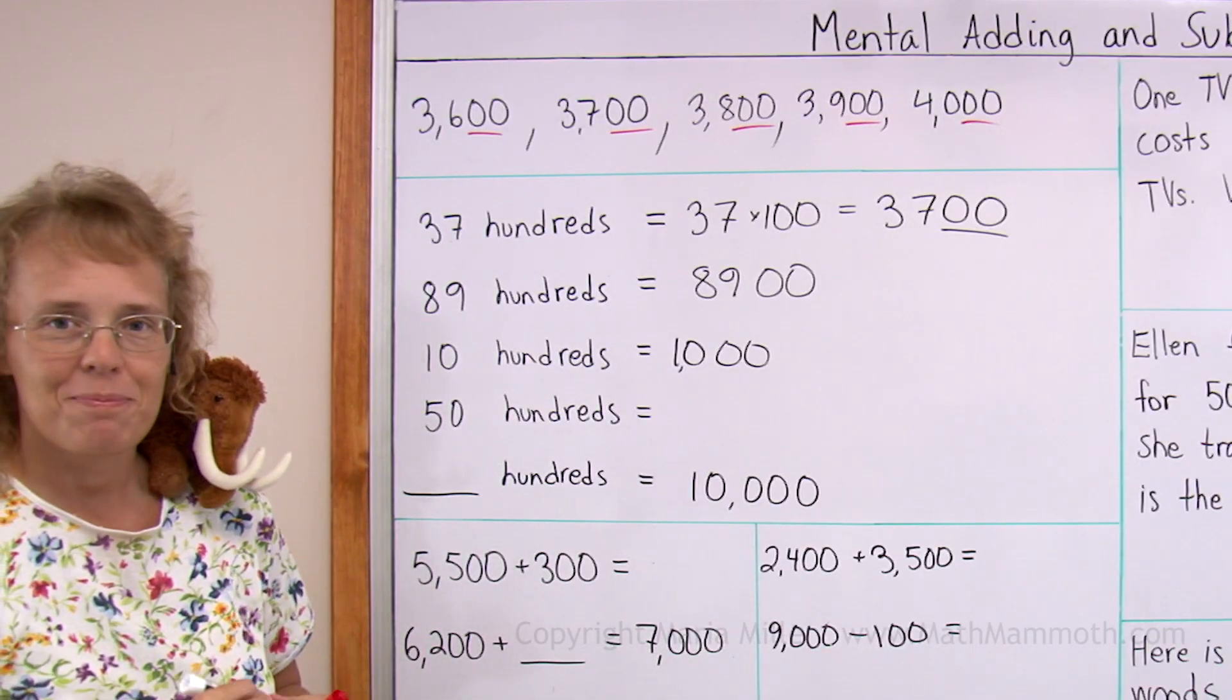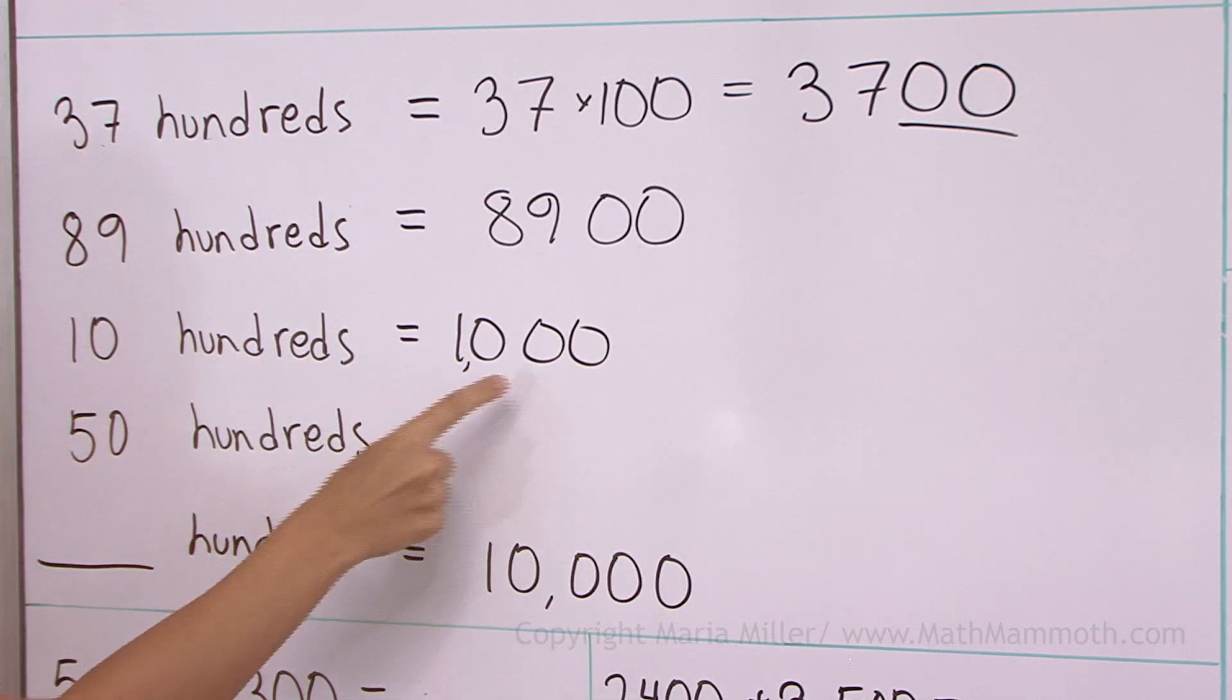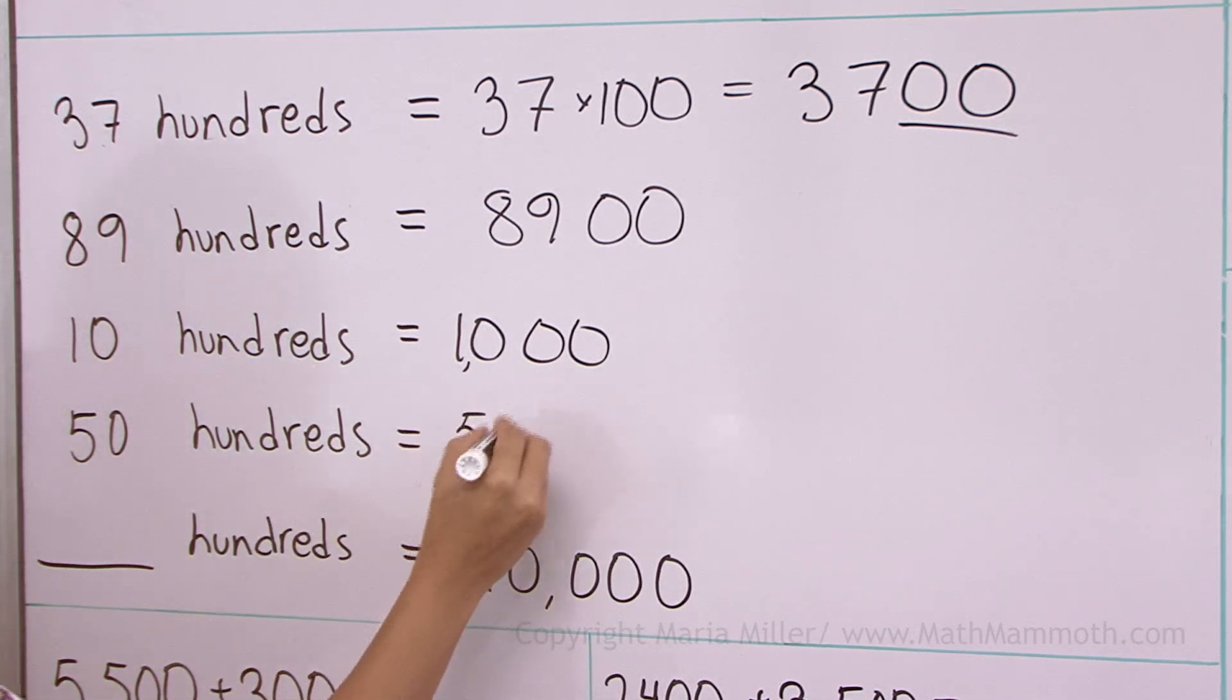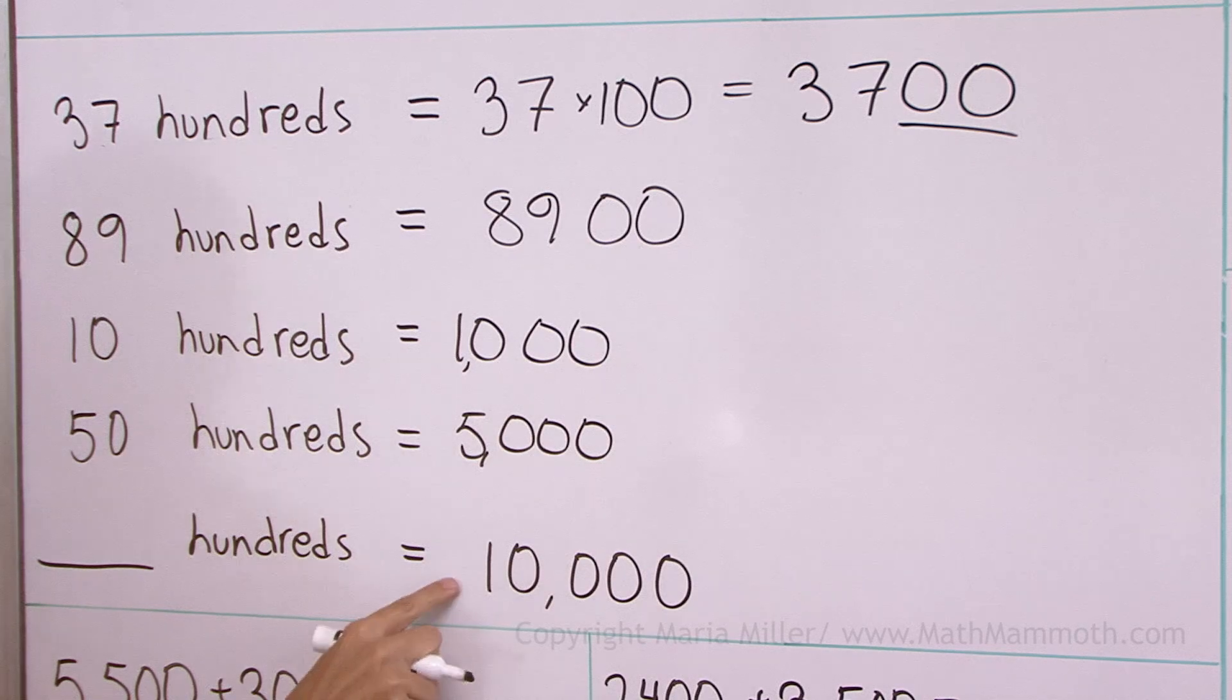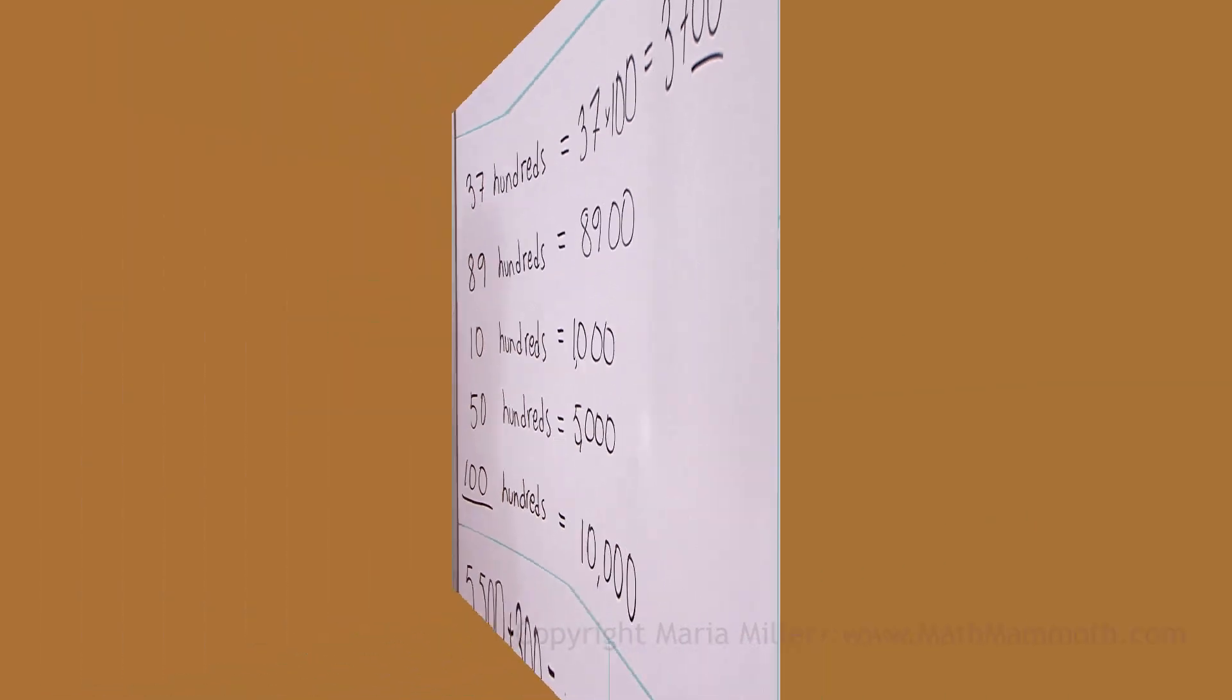How about 50 hundreds? If 10 hundreds is this much then 50 hundreds is 5 times that or 5000. And so what about this number? It is 10,000. How many hundreds would it be? Compare it to 5000. I think we get here 100 hundreds.